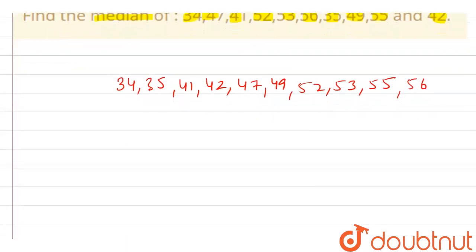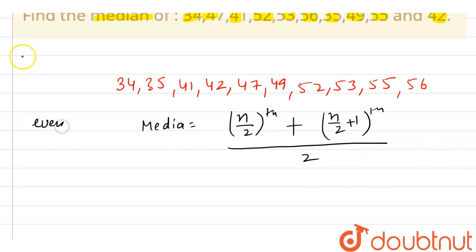The median is (n/2)th term plus (n/2 + 1)th term, whole divided by 2. Here the median is this when the number of terms is even.